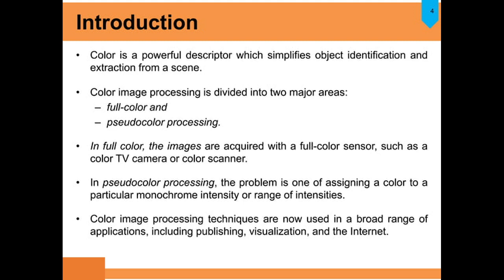What is color? It is a powerful descriptor which simplifies object identification and extraction from a scene. Color image processing can be divided into two major areas: full color and pseudo color processing. In full color, images are acquired with a full color sensor such as a color TV camera or color scanner. In pseudo color processing, a color is assigned to a particular monochrome intensity or range of intensity — assigning color to a black and white image, which is actually false color.